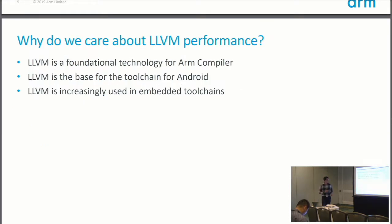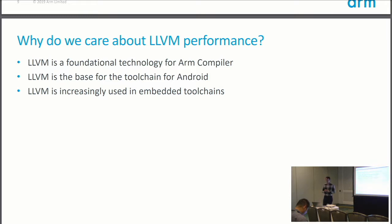Moving on to what we're doing for LLVM performance — to preempt a question about whether we're moving towards LLVM as a company: LLVM is important in certain segments. GCC is important for infrastructure and server networking. LLVM is a foundational technology for ARM Compiler — both the HPC ARM Compiler and the embedded ARM Compiler are built on top of LLVM. It's also the base toolchain for Android, which has entirely moved to LLVM. And we're seeing movement towards LLVM in open source embedded toolchains, though we're not there yet.